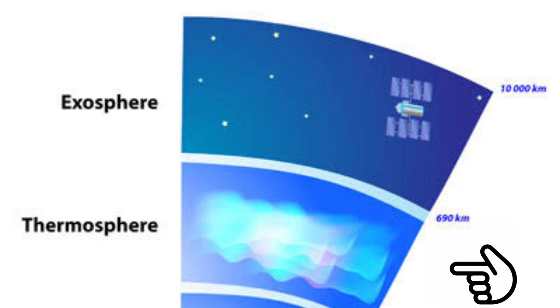The thermosphere is found 85 to 600 kilometers above the Earth's surface. It has charged particles that are affected by the Earth's magnetic field. The particles create the auroras or northern and southern lights.